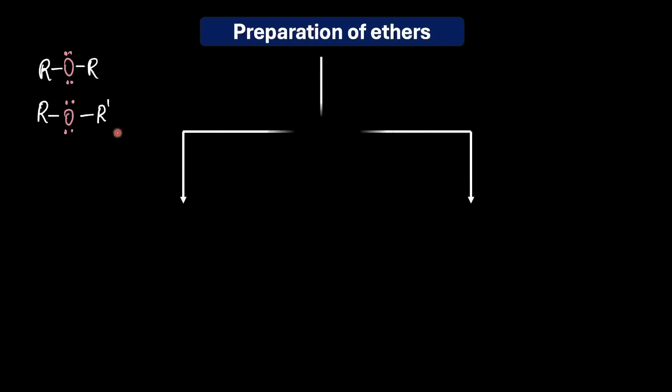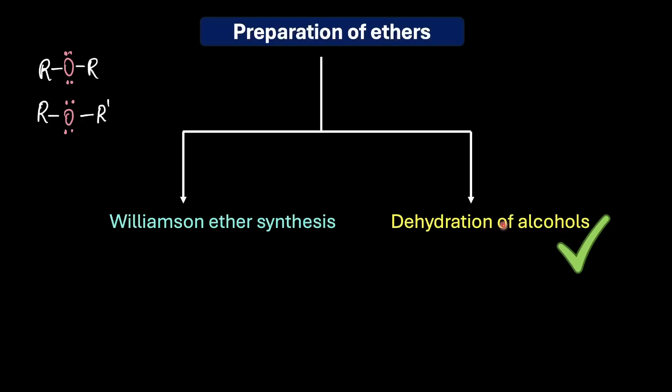Now traditionally ethers are prepared by two main routes: the Williamson synthesis and the acid-catalyzed dehydration of alcohols. In this video we are going to focus on the latter, detailing how primary alcohols under carefully controlled conditions undergo bimolecular dehydration to give us a symmetrical ether.